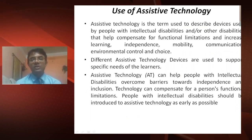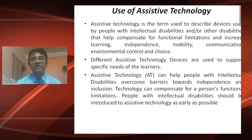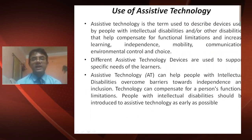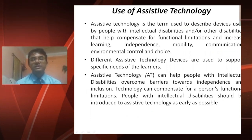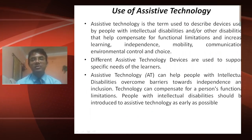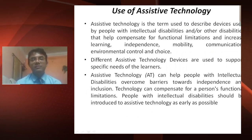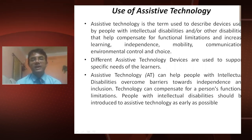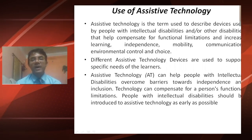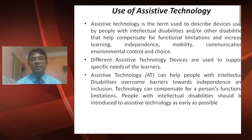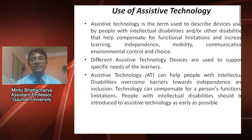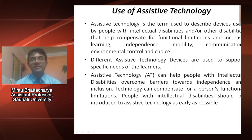Regarding assistive technology: assistive technology is the term used to describe devices used by people with intellectual disabilities and other disabilities that help compensate for functional limitations and increase learning, independence, mobility, communication, environmental control, and choice. Different assistive technology devices are used to support specific needs of the learner. Assistive technology can help people with intellectual disabilities overcome barriers toward independence and inclusion, and people with intellectual disabilities should be introduced to assistive technology as early as possible.